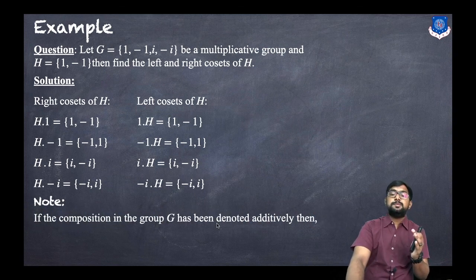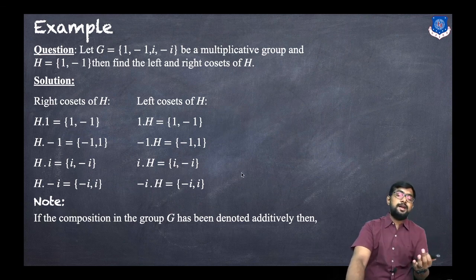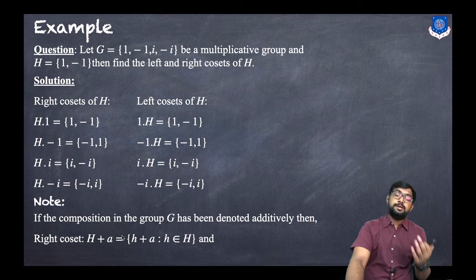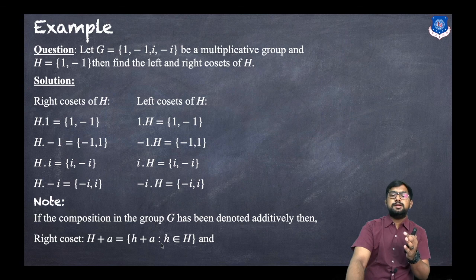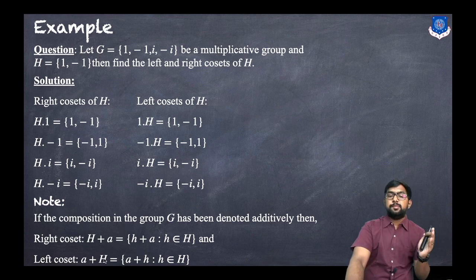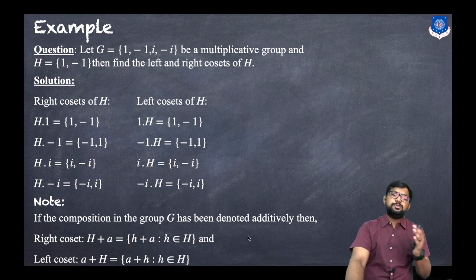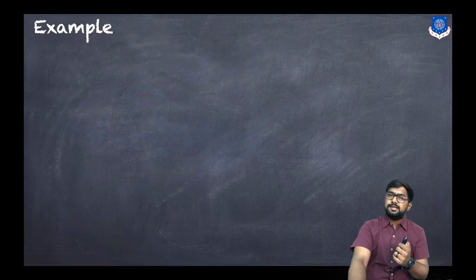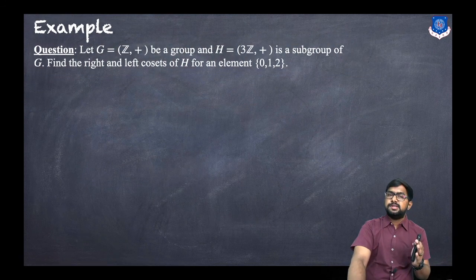Note: if the composition in the group is denoted additively, then instead of multiplication we use addition. The right coset notation becomes H+a = {h+a : h belongs to H}, and the left coset notation becomes a+H = {a+h : h belongs to H}. These are the notations when we have an additive operation.